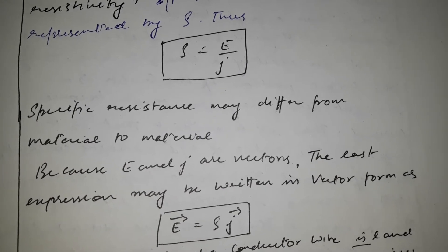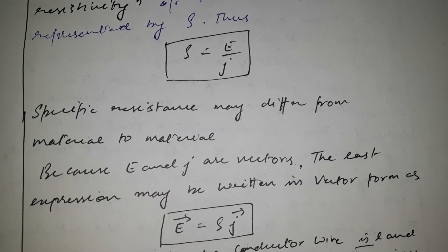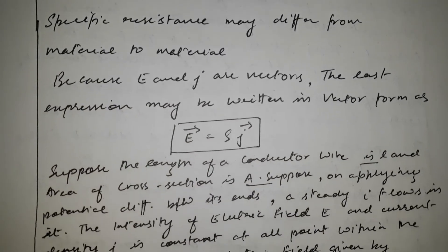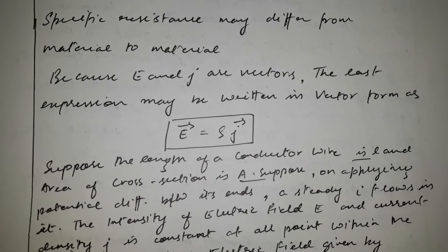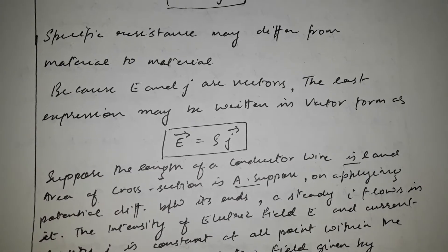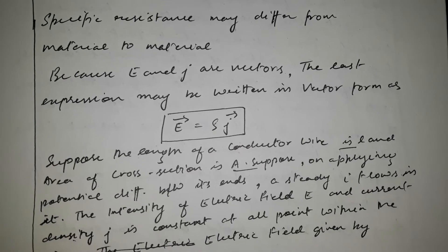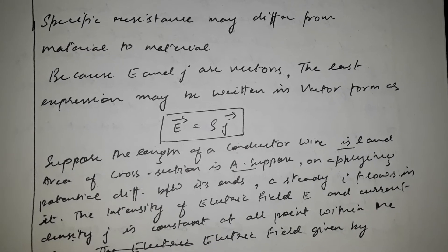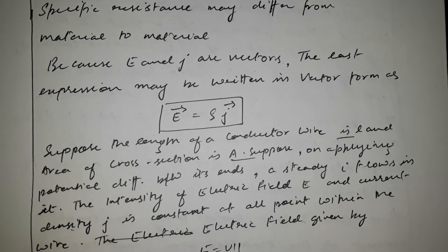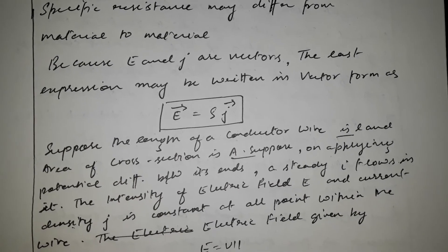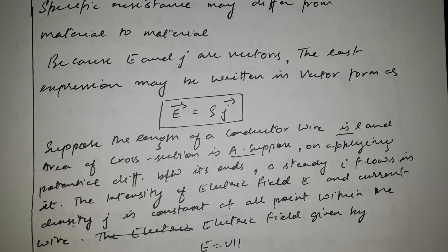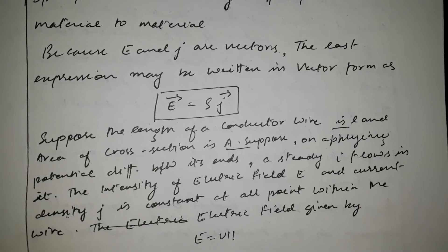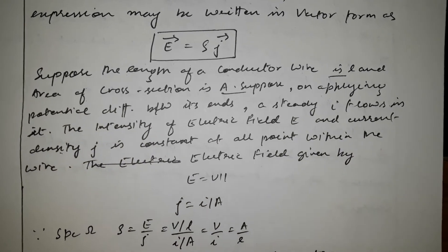Because E and J are vectors, the expression may be written as E vector equals rho into J vector. Suppose the length of the conductor wire is l, area of cross-section is A, and a potential difference V is applied through its ends. A steady current I flows in it, and the intensity of electrical field E and current density J is constant at all points within the wire.